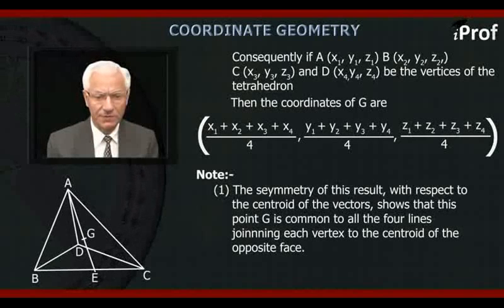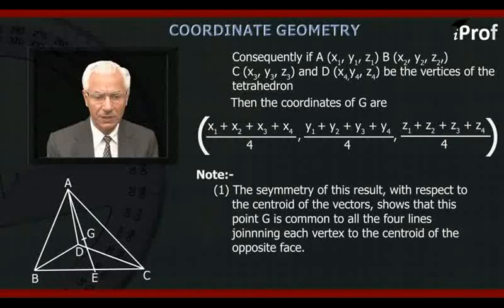Note that the symmetry of the above result with respect to the coordinates of the vertices shows that this point G is common to all the four lines joining each vertex to the centroid of the opposite face.